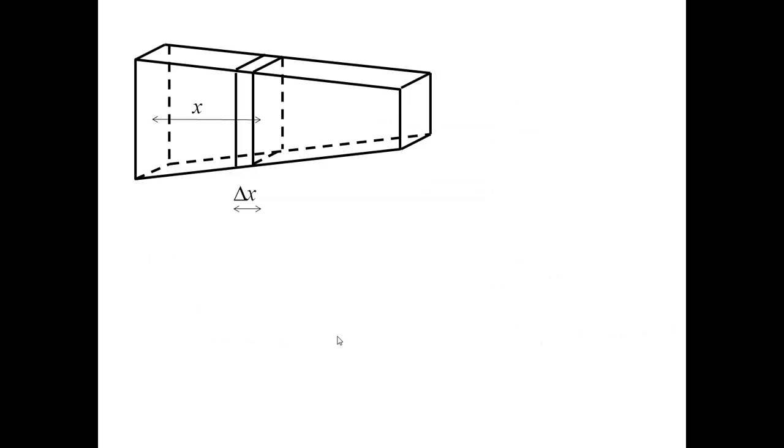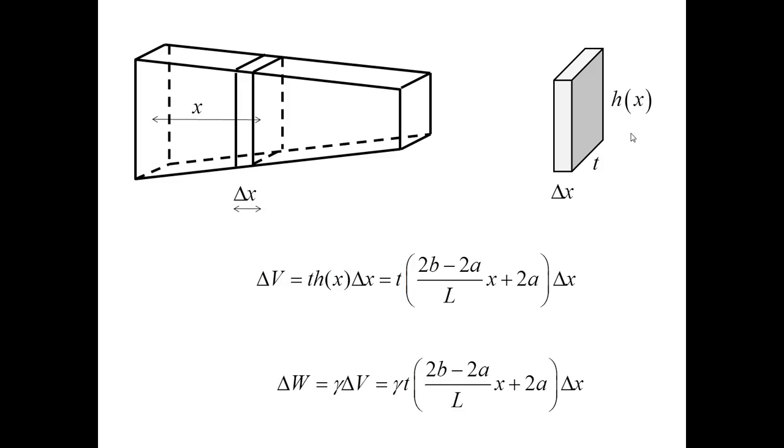Next, let me look at an elementary volume of thickness delta X. This volume could be associated with a prism shown here. Delta X is the dimension along the X axis, T is the thickness, and H of X is the height. In dark gray, you can see the cross-section that was identified on the previous slide. The calculations for delta V is very simple. It's a rectangular prism, so the volume is easily computed. Also, I can obtain the weight of this elementary volume simply by multiplying the specific weight times the volume.